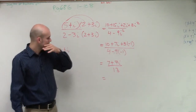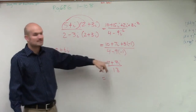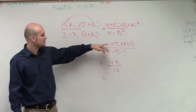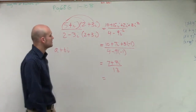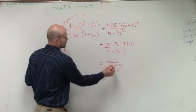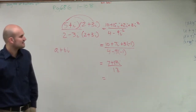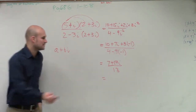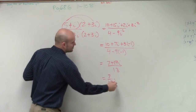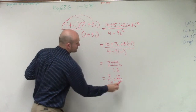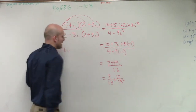A student notes the i term should be 17i, not 7i — confirmed, it's 17i up top. So the result is 7 plus 17i divided by 13. Therefore, in standard form, it would be 7 over 13 plus 17 over 13 times i. You just distribute the 13 to both terms.